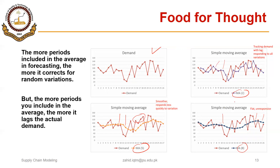We can conclude that a smaller n has better responsiveness to changes in demand but there is less smoothing. If we increase n, the smoothing is greater but responsiveness to changes in demand is less. So for random variations in demand — which is generally the case — we use a smaller n, and if the data is stable with little variation in historical demand, we use a larger value of n.